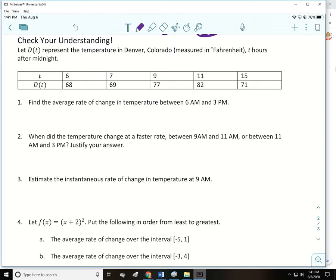For this first problem, we have a table that gives the temperature in Denver, Colorado, measured in Fahrenheit, where T is the hours after midnight. So we want to find the average rate of change for the temperature between 6 a.m. and 3 p.m. For 6 a.m., what would T be? How many hours since midnight is that? 6. What about 3 p.m.? 15. So I'm going to find D of 15 minus D of 6 in the numerator, and the denominator is just going to be 15 minus 6.